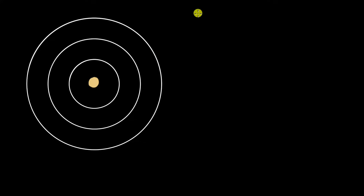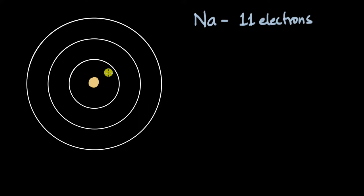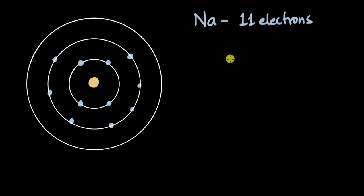Let's say we have a sodium atom, which has a total of 11 electrons. If our task is to distribute these 11 electrons in the orbits, maybe we could have four electrons in one shell and seven in the next — the L shell. K, L, M is how the shells go. But it turns out this is not how electrons are actually distributed in a sodium atom.